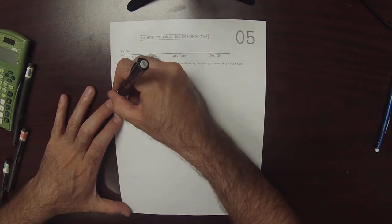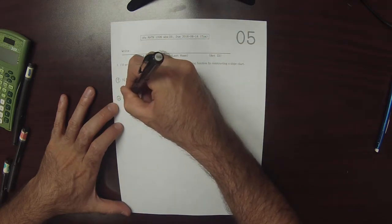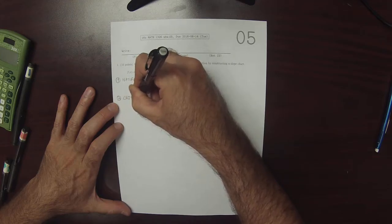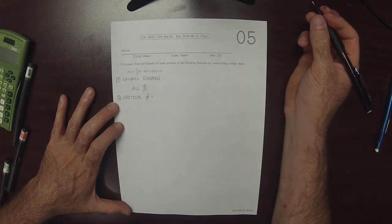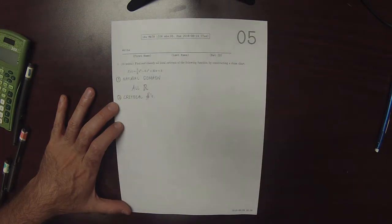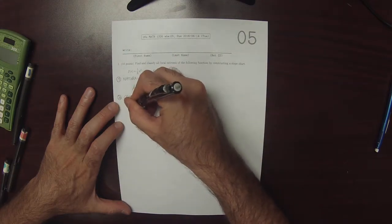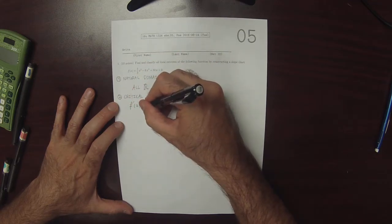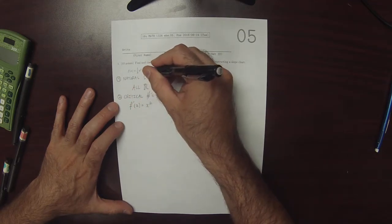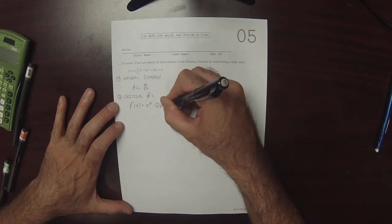So the next step is to find the critical numbers. That is to say, places where the derivative is undefined or zero. So the derivative of f is x squared minus 12x plus 32.